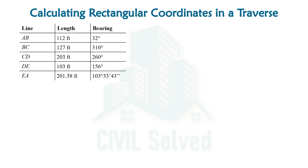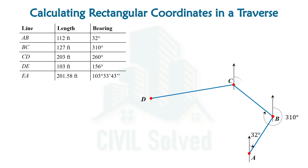Now let's show these lines with the help of a sketch. Let's say that this is the start point of the traverse. Starting from that point we have AB line with the given bearing, BC line, CD line, DE line, and EA line.